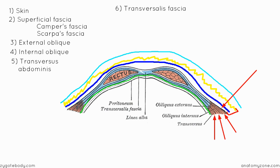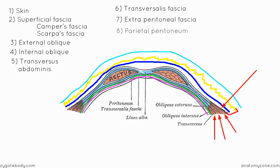Underneath the transversalis fascia we've got the extraperitoneal fascia, which I'm drawing on in purple. This is a thin layer of connective tissue that lies between the transversalis fascia and the next layer, the parietal peritoneum. It gets the name extraperitoneal fascia because it lies outside the parietal peritoneum.